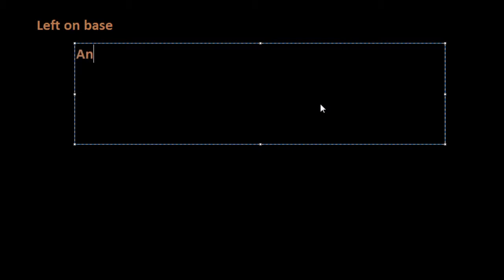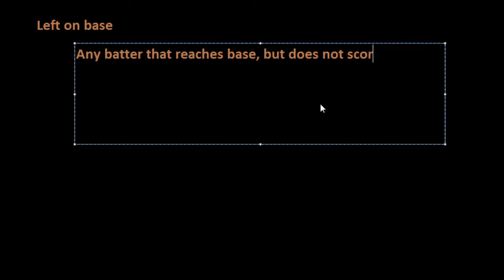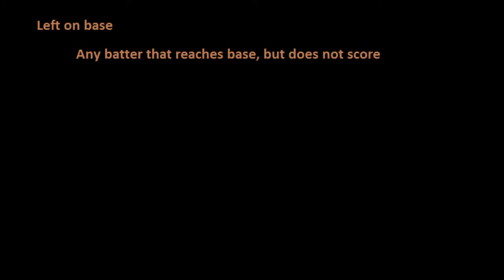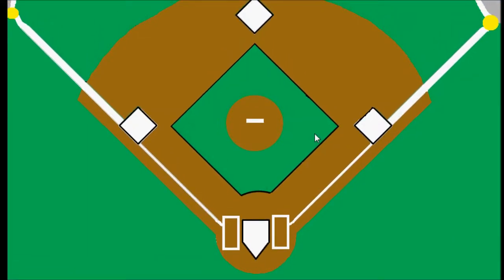Being left on base is any batter that reaches base but does not score — he does not complete his way around the bases. This would occur when the third out in that particular half inning is made. So basically if we have a runner on first and second base and the third out is made and the teams exchange sides, then we would have two runners left on base.